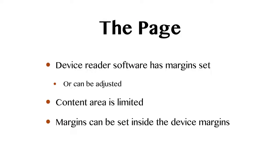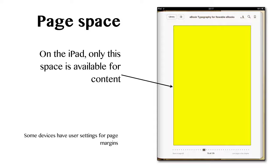Moving on to spacing. The page itself already has its margins set, though in some cases the user has control over them. Your content area is limited in a reflowable eBook because the margin you set as a book designer is inside the device margin. When you set margins in CSS — margin-left, margin-right, etc. — you're moving inside that space defined by the device, shown here as a yellow box.